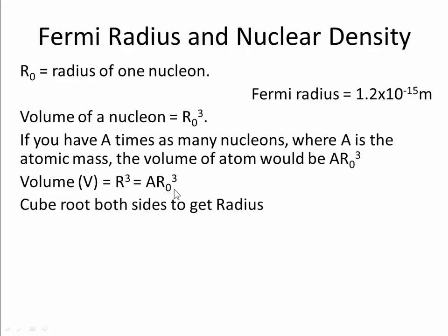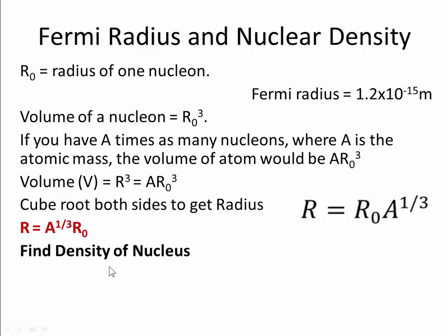So if we cube root both sides, we get the radius. So the radius of the nucleus will be A, which is the number of nucleons in the nucleus, to the third root times by the Fermi radius. And in fact, this is the formula in the data booklet.